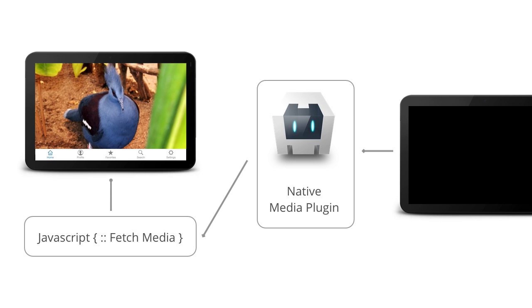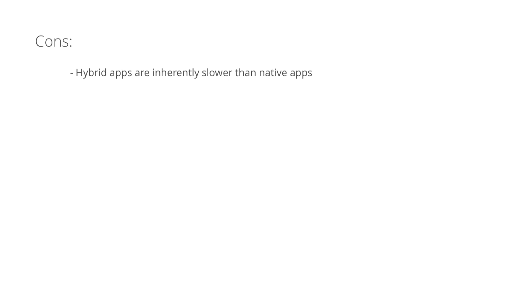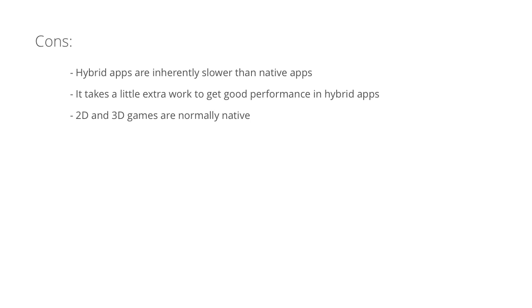And there you have it — the hybrid architecture in a nutshell, by combining native and web technologies. There are some drawbacks, however, to hybrid apps. Hybrid apps are inherently slower than native apps. However, if coded properly, this shouldn't be an issue. Throughout this course, we'll be looking at how to write code with performance and style in mind, such as memory management and taking advantage of hardware acceleration. Making 2D and 3D games is possible in hybrid apps, but native apps will always be faster.